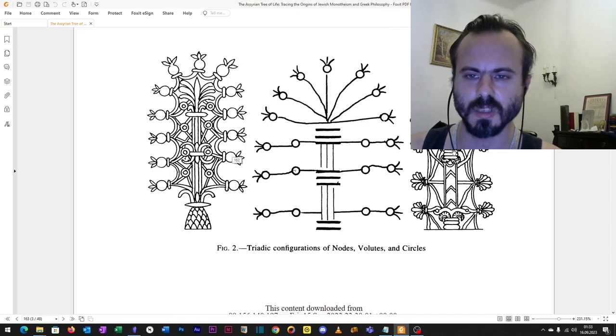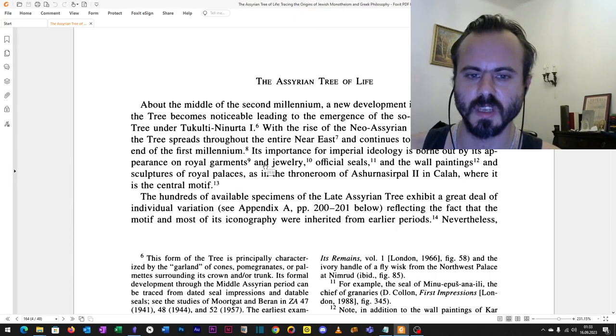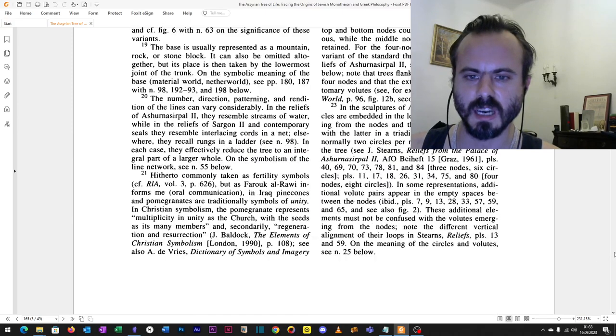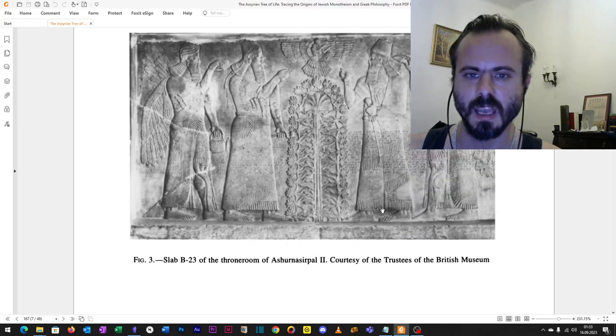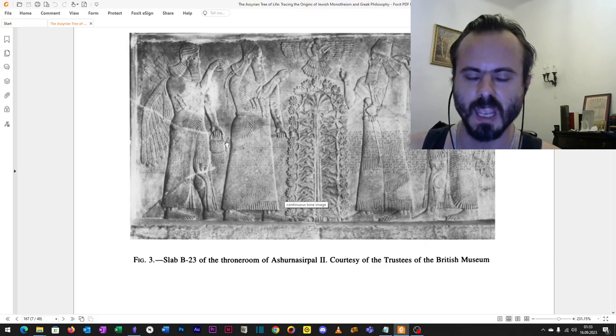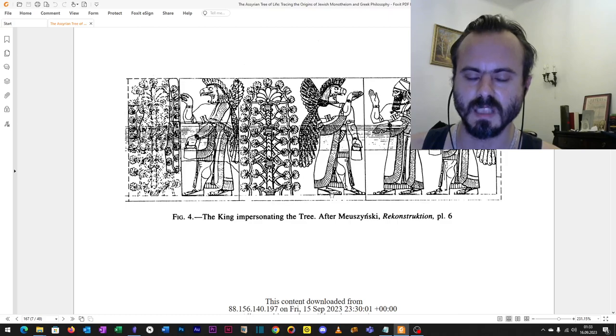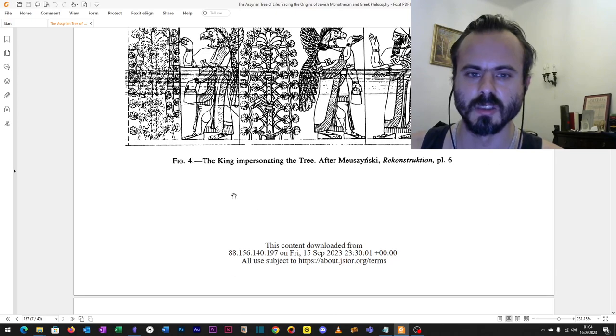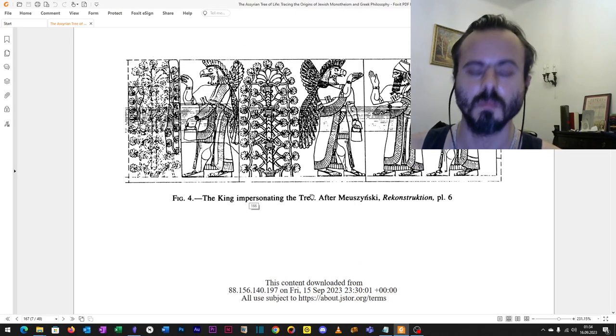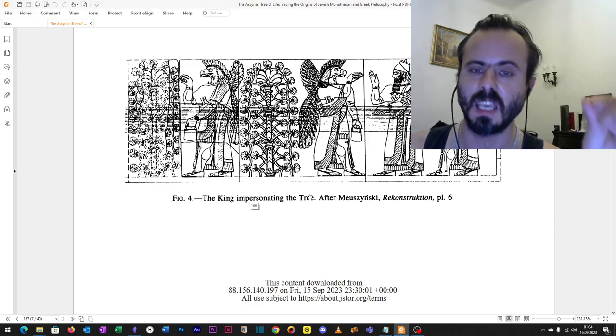We have various typographies of such Trees of Life, and I want to read this article to you. However, I highly recommend it as we can find similar motifs and typologies in both the throne rooms, for example of Ashurbanipal II, that's in the British Museum. If you're interested, you can visit the Berlin Pergamon Museum and find several such typologies as well. Here we have the king impersonating the tree, because the living human being, the king, the queen,